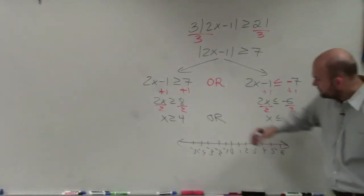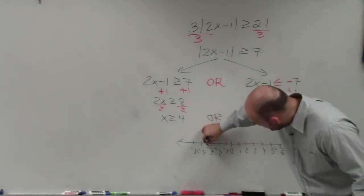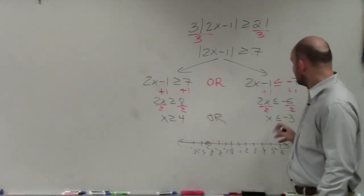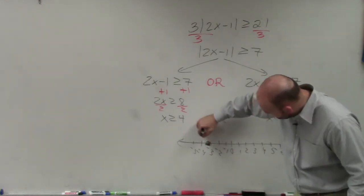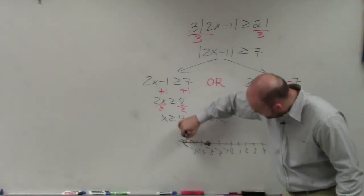So x is less than or equal to negative 3. I go to negative 3. Make a nice big circle. It's less than or equal to. So it's going to be solid. Shade to the left.